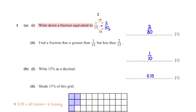Write down a fraction equivalent to 1 over 15. To get a fraction equivalent to 1 over 15, we multiply the numerator and denominator by a positive integer greater than 1. If we pick 2, then 1 times 2 gives us 2, and 15 times 2 gives us 30. So we have 2 over 30.